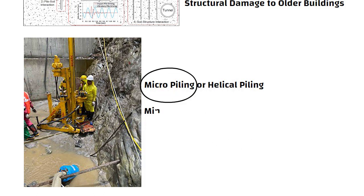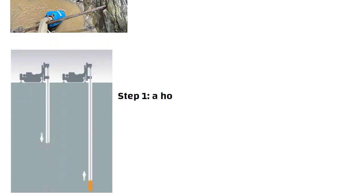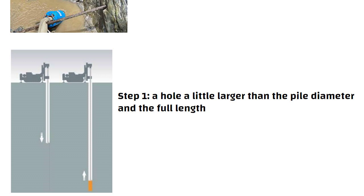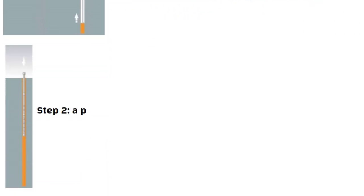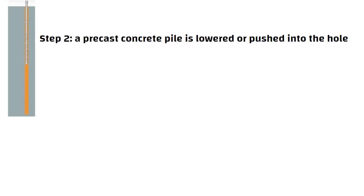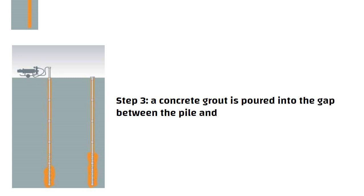Micro piles or mini piles are small piles that are constructed in the following way. Step 1: A hole a little larger than the pile diameter and the full length of the pile is dug into the ground using an apparatus like a pile boring machine. Step 2: A precast concrete pile is lowered or pushed into the hole. Step 3: A concrete grout is poured into the gap between the pile and the earth.